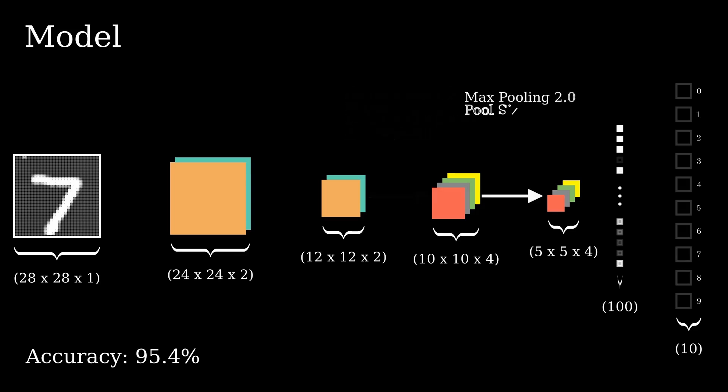We'll then perform max pooling, exactly as earlier, before we flatten the matrices out. This gives us a flattened layer with 100 nodes. Here is our second layer.